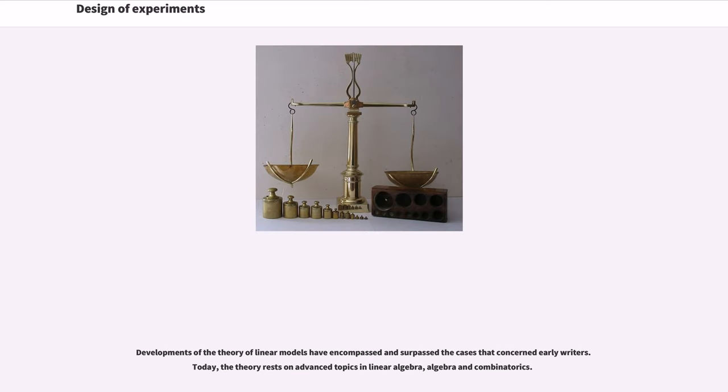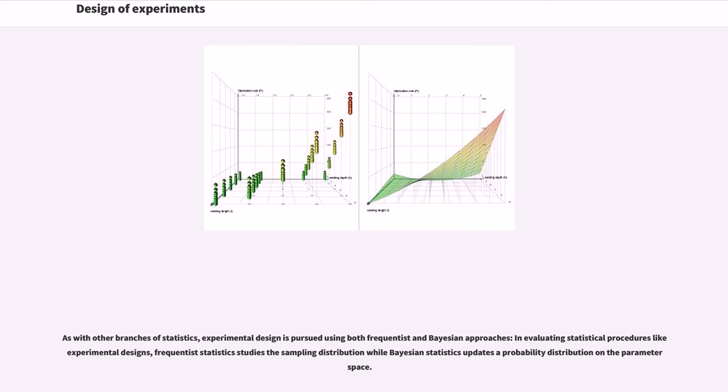Developments of the theory of linear models have encompassed and surpassed the cases that concern early writers. Today, the theory rests on advanced topics in linear algebra, algebra and combinatorics. As with other branches of statistics, experimental design is pursued using both Frequentist and Bayesian approaches. In evaluating statistical procedures like experimental designs, Frequentist statistics studies the sampling distribution while Bayesian statistics updates a probability distribution on the parameter space.